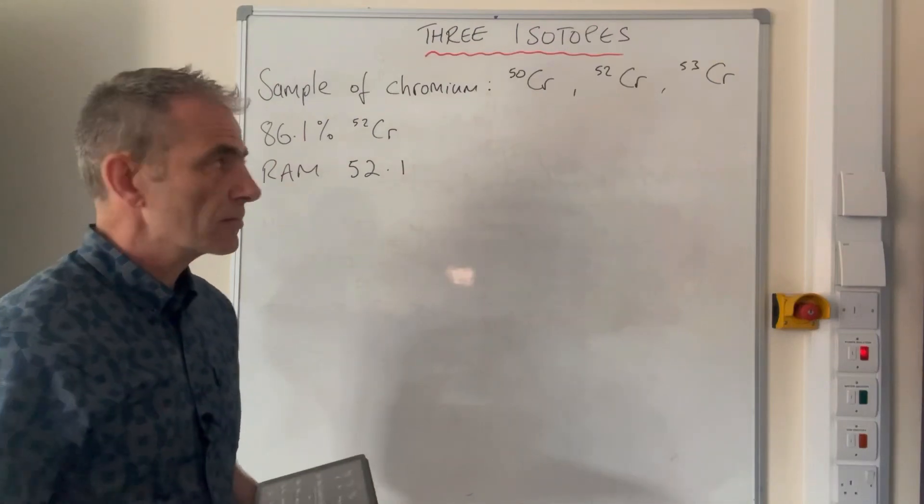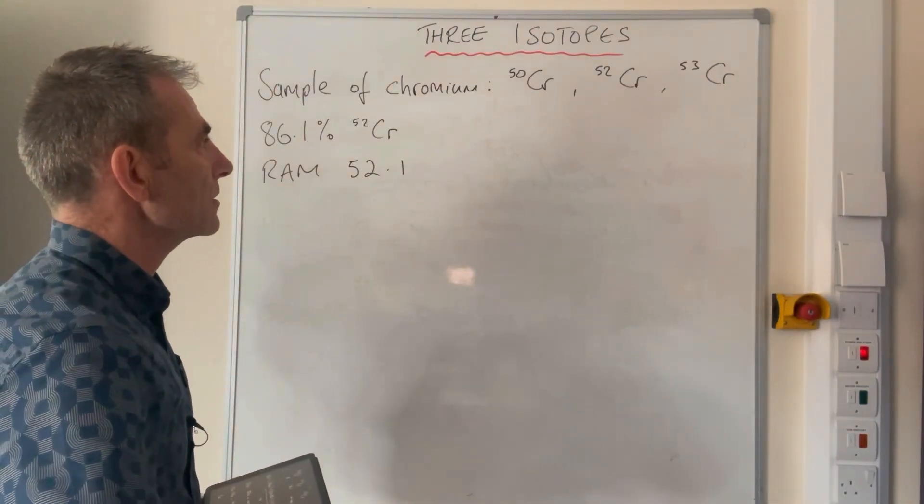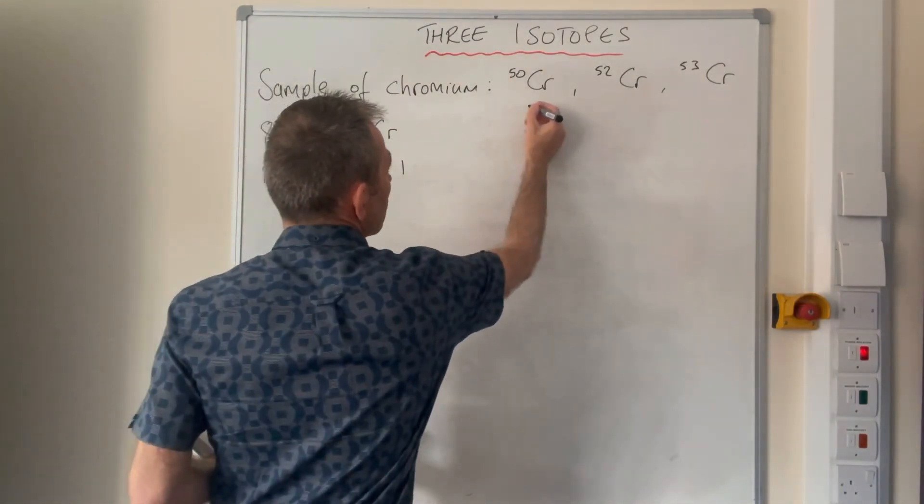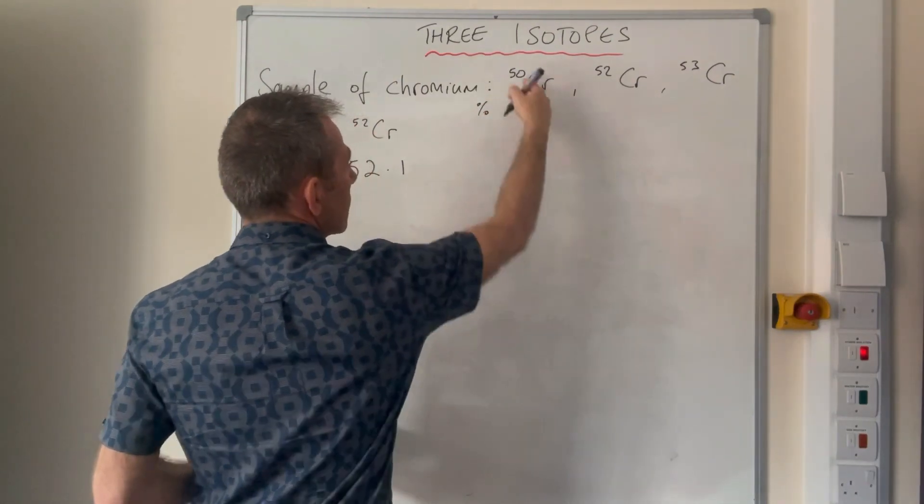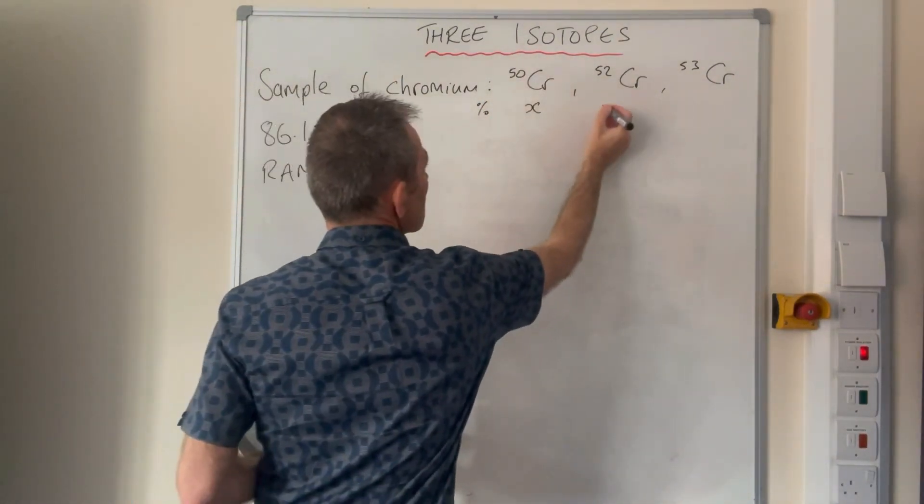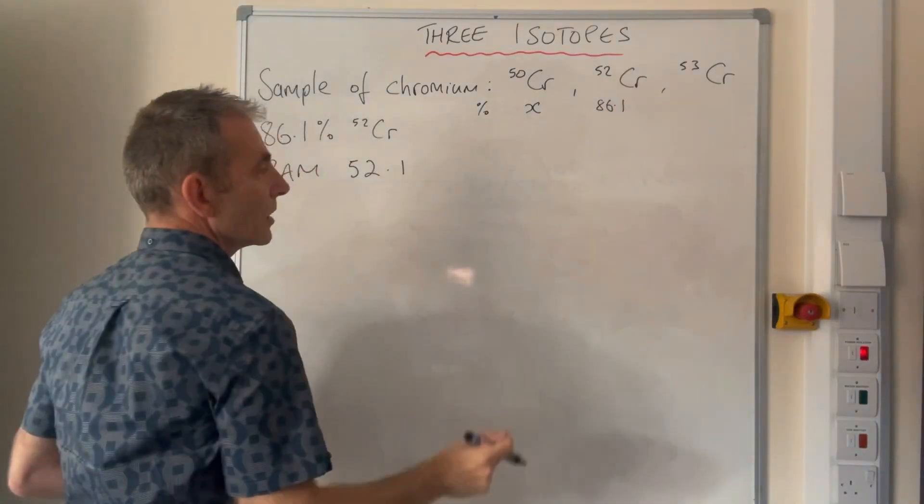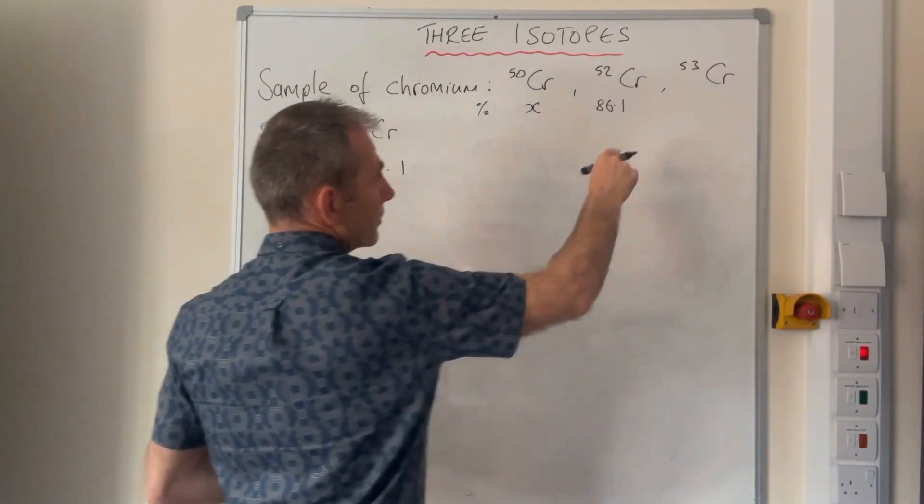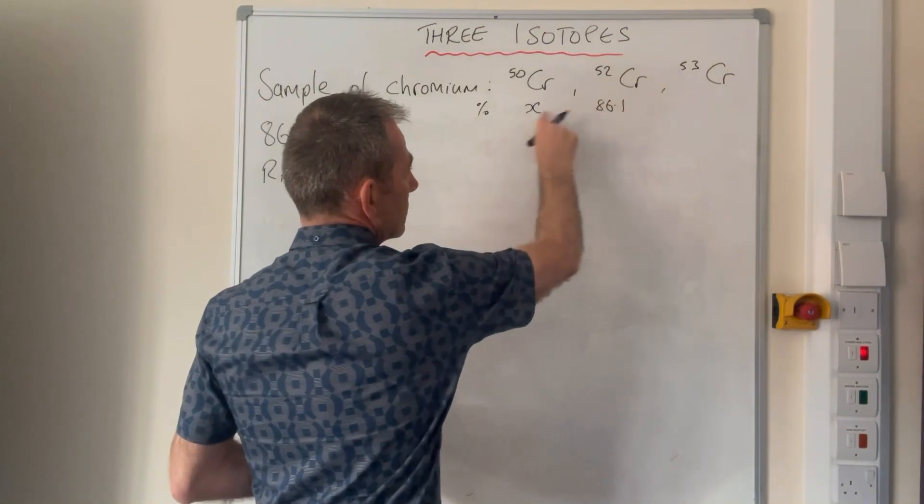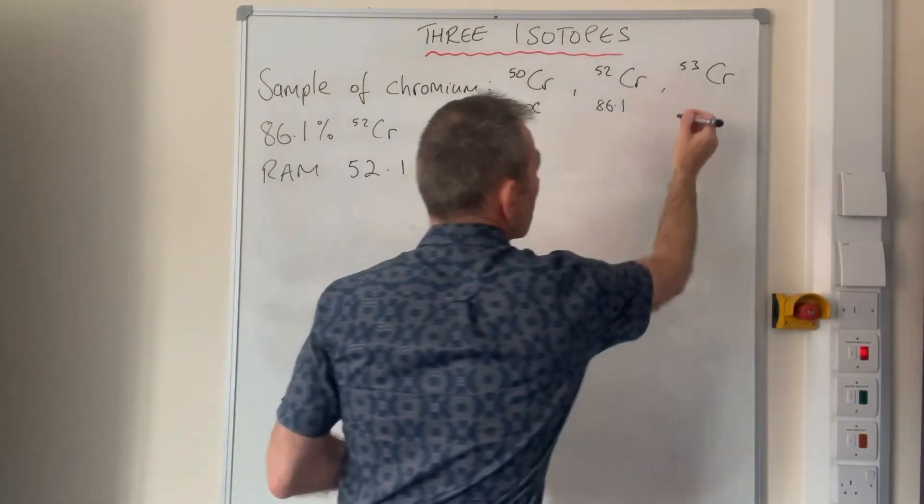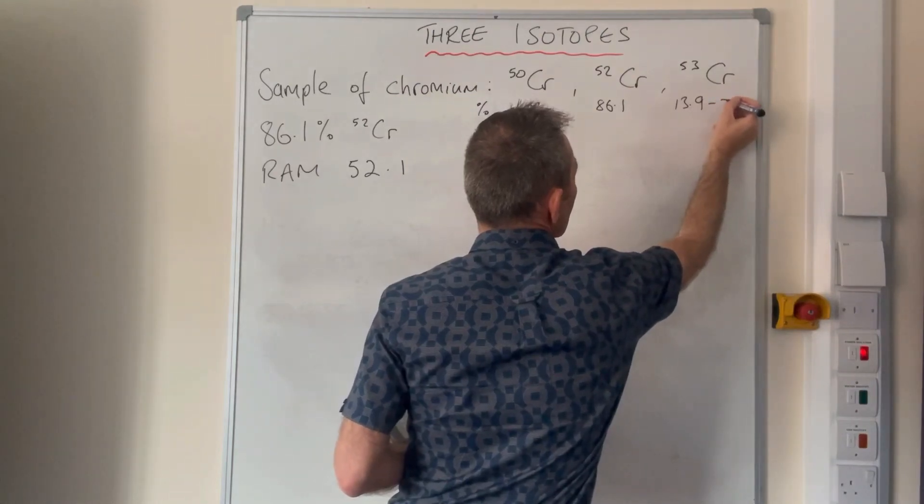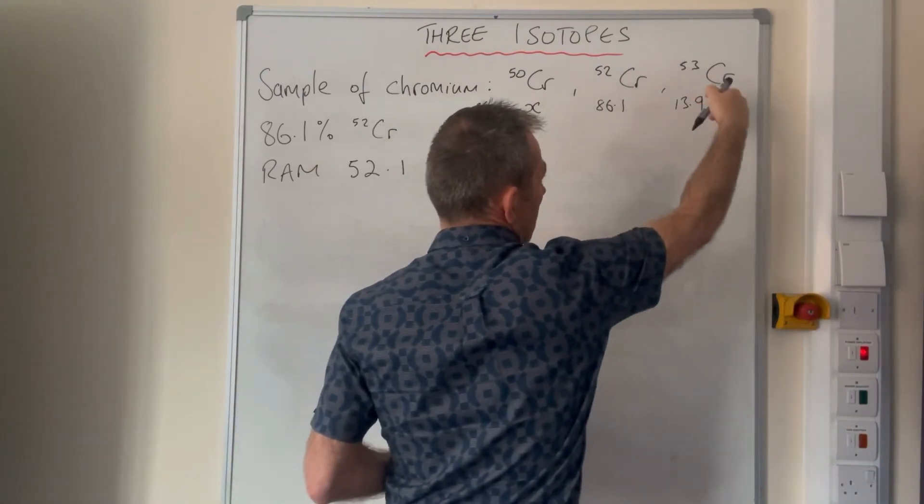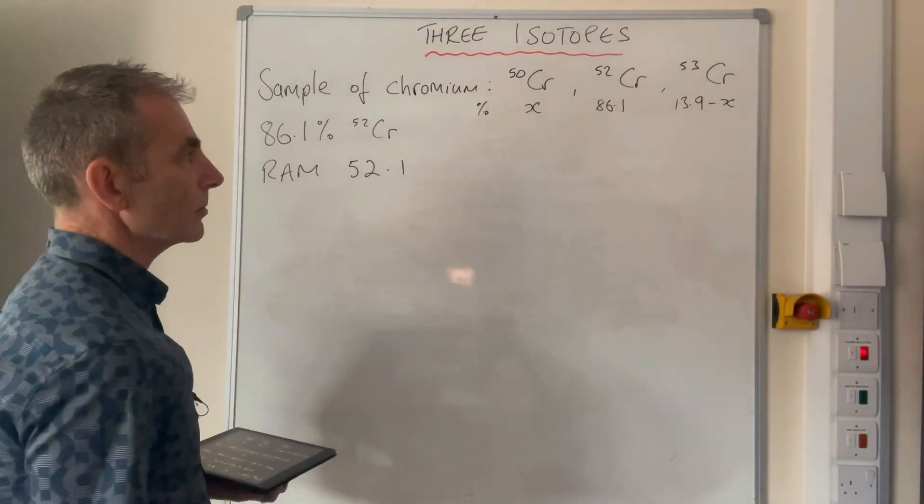The method's exactly the same as what you've just seen, so we'll just say that the percentage abundance for the 50 is x, you can do it either way around. So the percentage abundance of 50 is x, we know 52 is 86.1, so the chromium-53, remember these add up to 100, so the 53 is going to be 100 minus that minus that, which comes out at 13.9 minus x. So 100 minus 86.1 is 13.9 minus the x, and then you're left with the percentage abundance for the chromium-53.